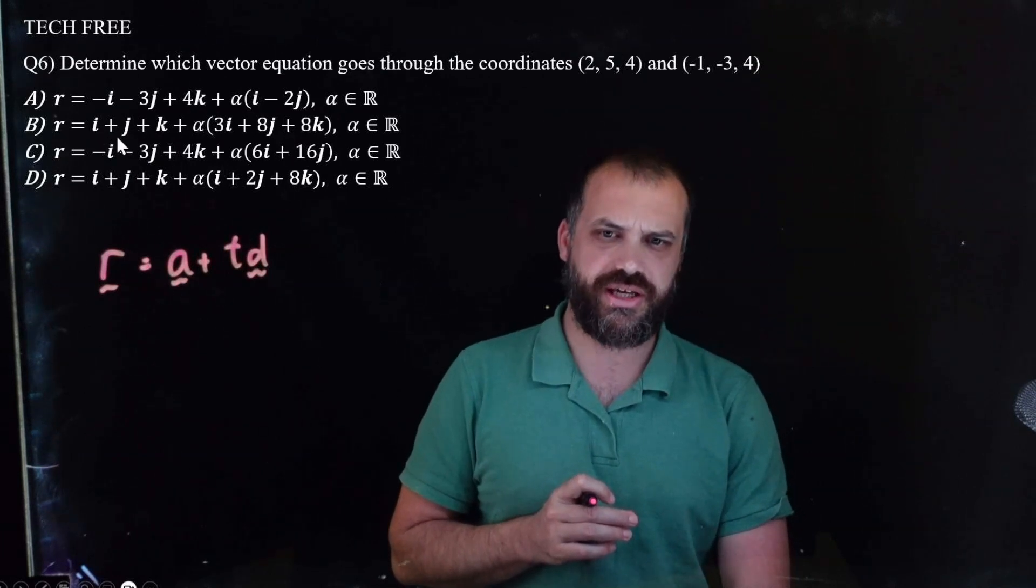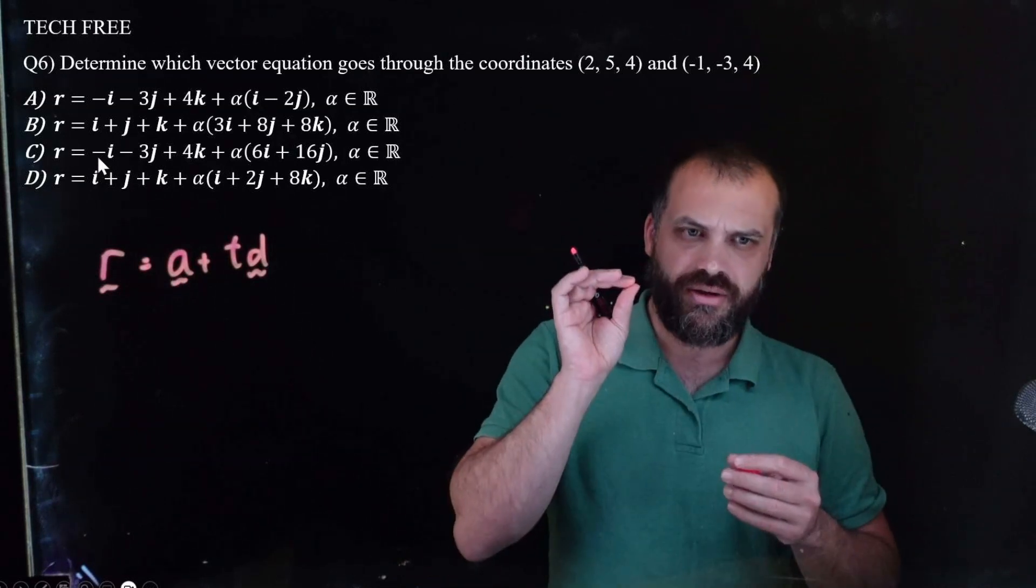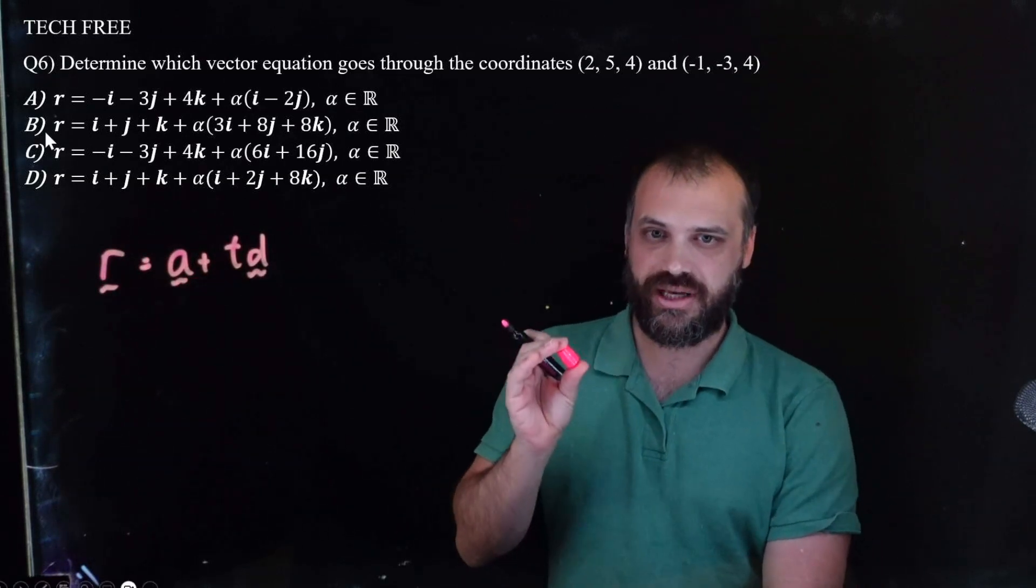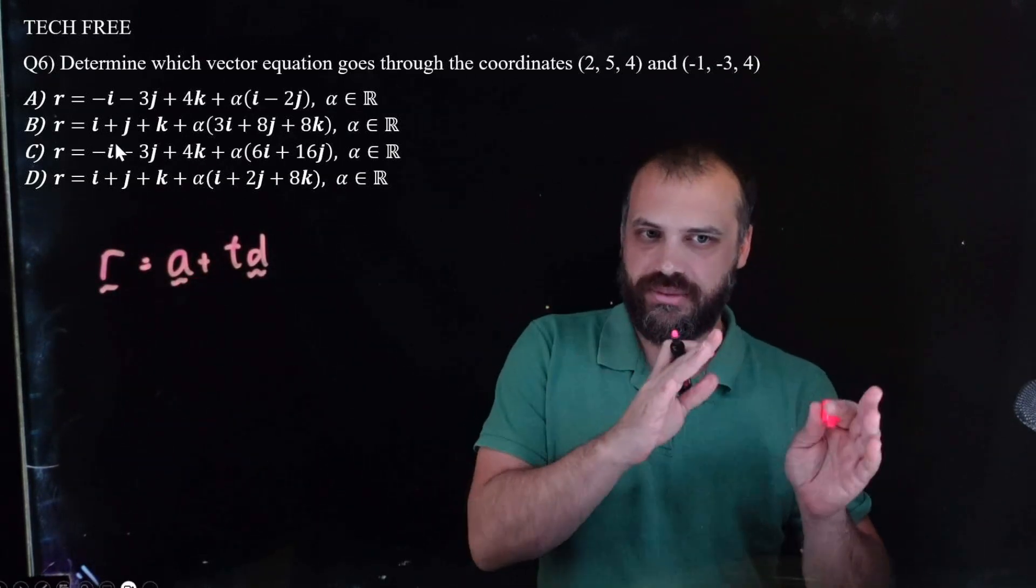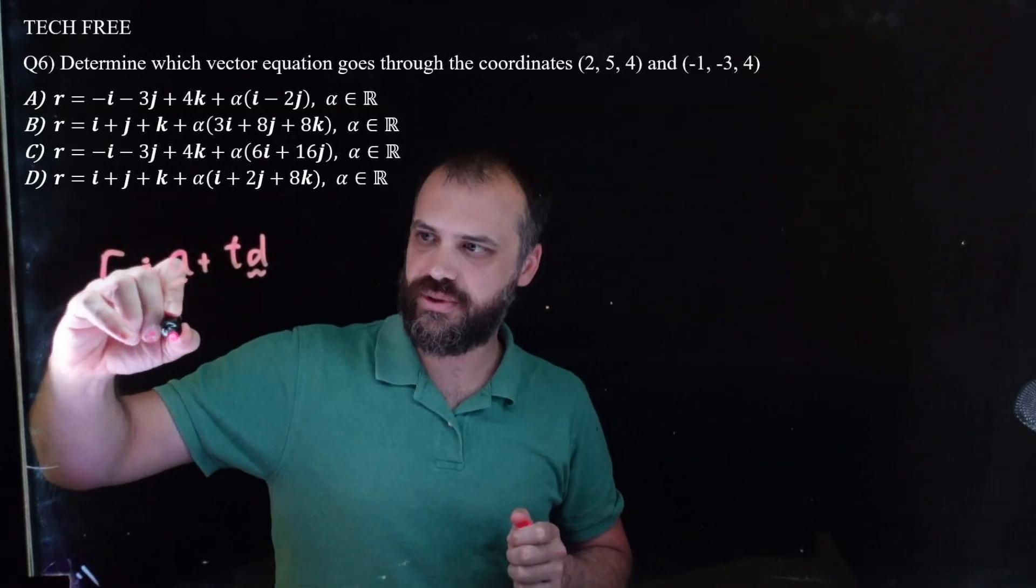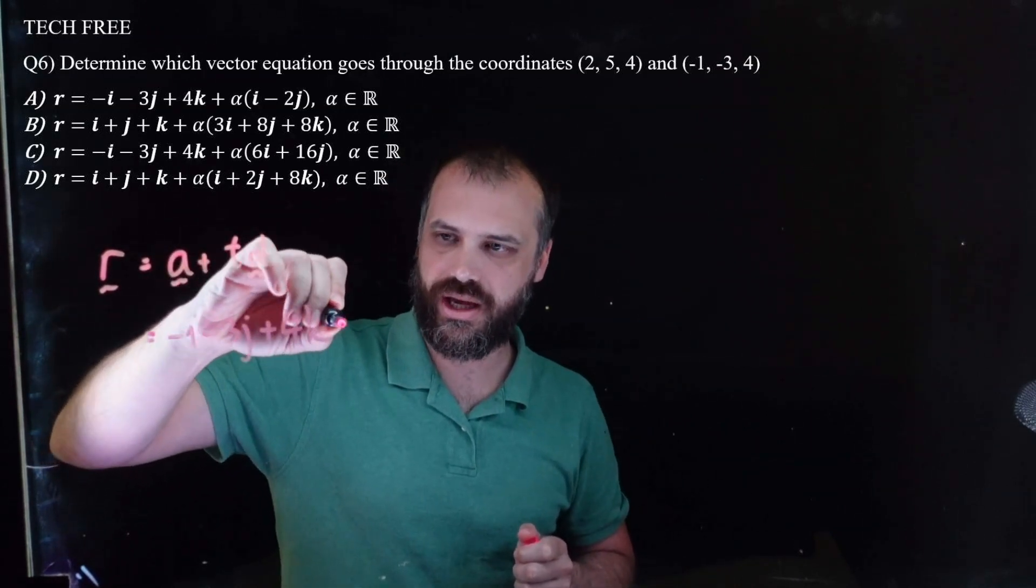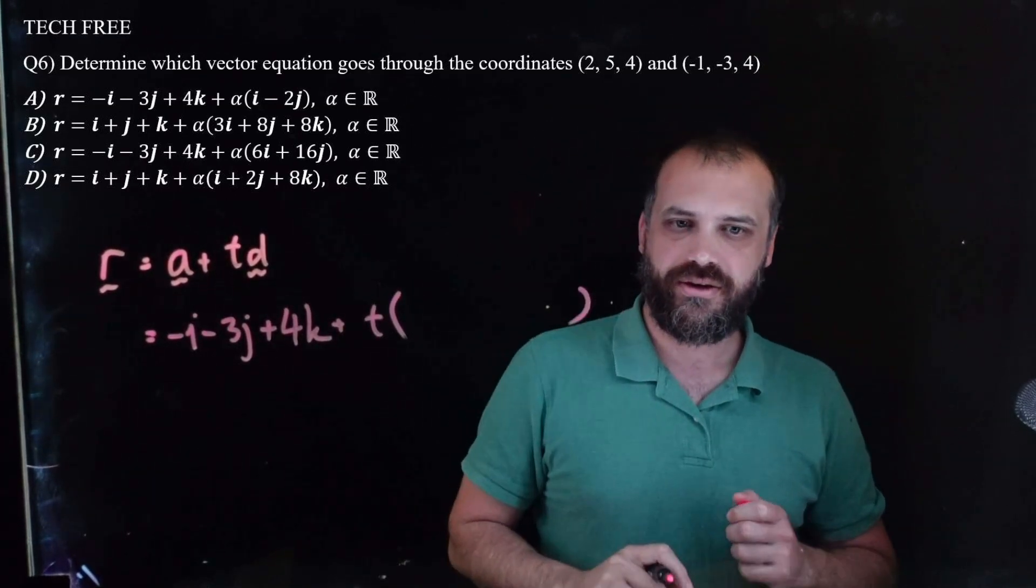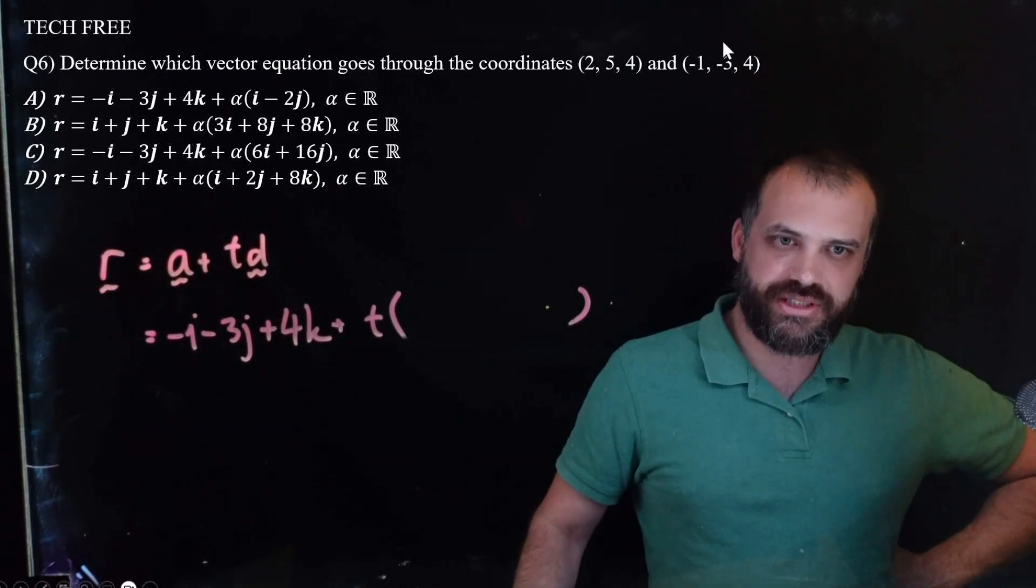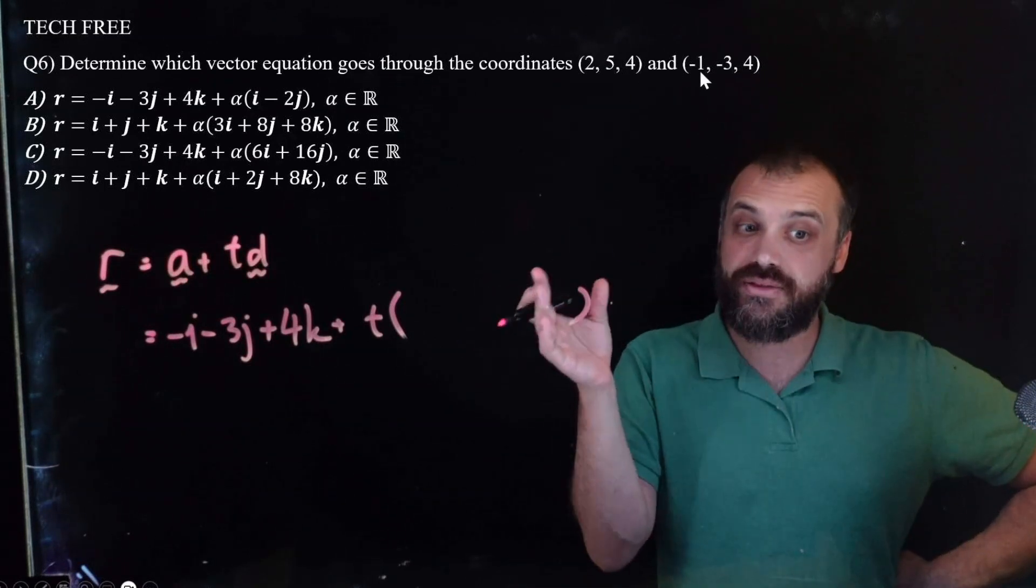I don't know why it's just I, J, K and I, J, K in B and D, but it feels like I should use negative 1, negative 3, 4 as my starting position because I think that's what the question writers have done. So sometimes it pays in multiple choice questions to look at the answers first. Alright, so we've got negative I minus 3J plus 4K plus T.